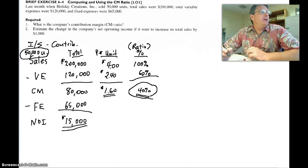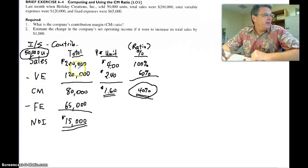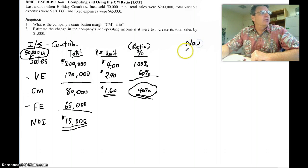Estimate the change in the company's net operating income if it were to increase total sales by $1,000. So what number is going to change? Total sales right here. There's total sales and we're going to increase it by $1,000. Let's make a new total column.